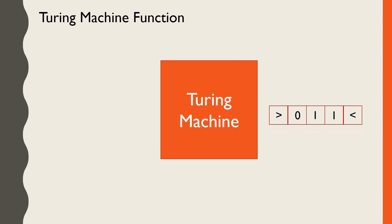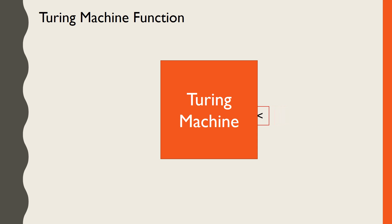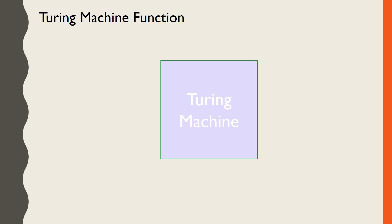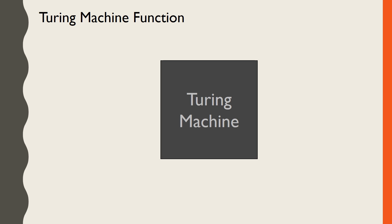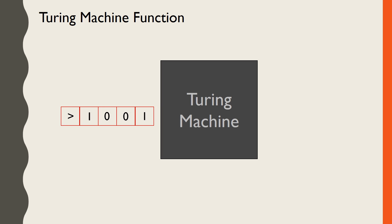The way Turing machines use this structure is the following. The input is written on the tape. The machine starts by reading the first symbol and writes a new symbol in its place, according to a set of instructions. The instructions also tell the machine which direction to move. The machine follows this read-write-move cycle over and over again, until it's told to halt. The string written on the tape at the end of all of this is the output, and the computation is complete.